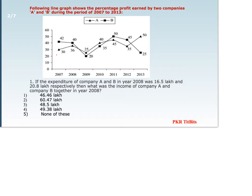For company A, expenditure is 100% = 16.5 lakhs. The profit percent of company A in 2008 is 36%, so we have to find 136%. That gives us 16.5 lakhs × 136 ÷ 100.